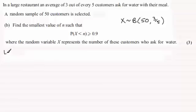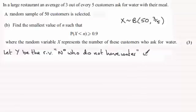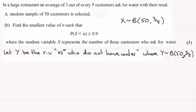In other words, what I'm going to do is define a new random variable — let's say Y. Let Y be the random variable, and since X was the number of customers who asked for water, Y is going to be the number who do not ask for water. That means Y will be distributed as a binomial distribution, still with 50 trials, but this time with probability 1 minus 3 fifths, which is 2 fifths or 0.4, and 2 fifths is in our tables.